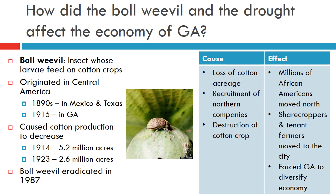By 1987, Georgia's farmers had successfully eradicated the boll weevil, and in 2000, Georgia farmers harvested over 1 million acres of cotton.